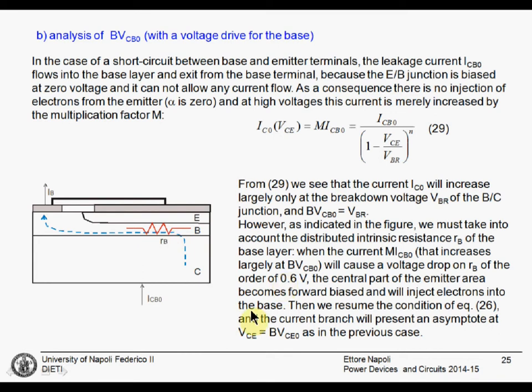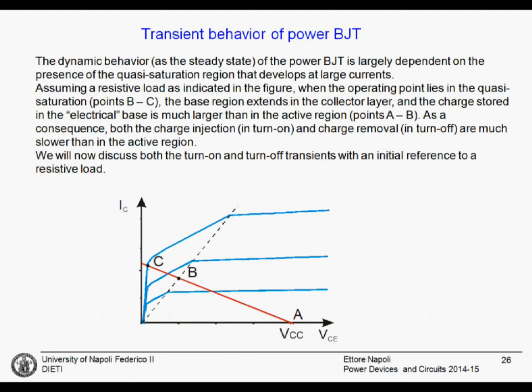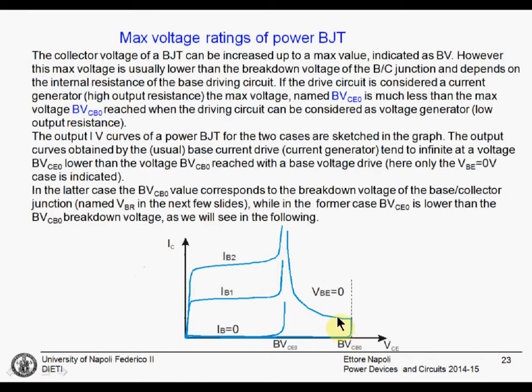But when the current increases, there will be a voltage drop on this resistance. When this voltage drop is around 0.7 volts, 0.5, it depends, the central part of the emitter region starts to be forward biased and will start to inject electrons into the base. This will cause an injection of electrons in this region. They will multiply causing an increase of other electrons injecting from here. And we'll activate the bipolar transistor. This means that when the current breakdown current increases, the emitter to base junctions is forward biased and will return in the previous case. With the current that does not go into the base, but proceeds to the emitter. And the asymptote of the characteristic in the voltage drive condition will still be BVCE0.